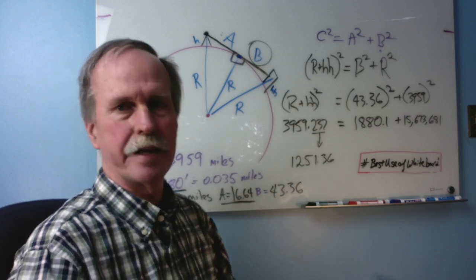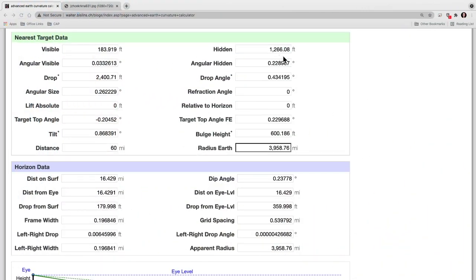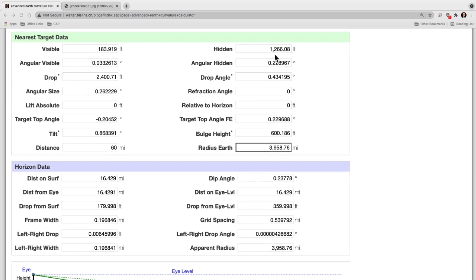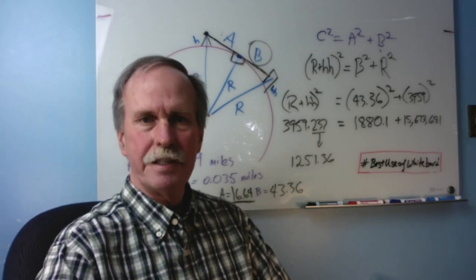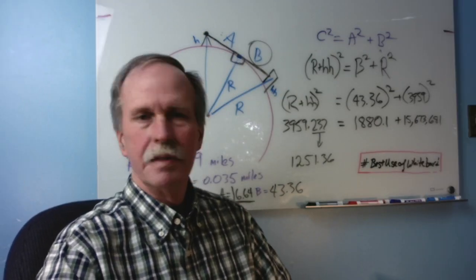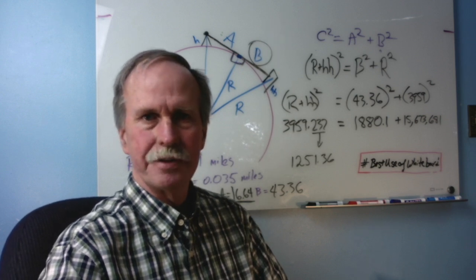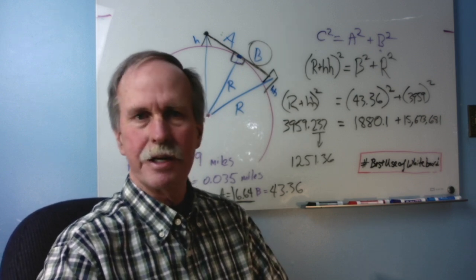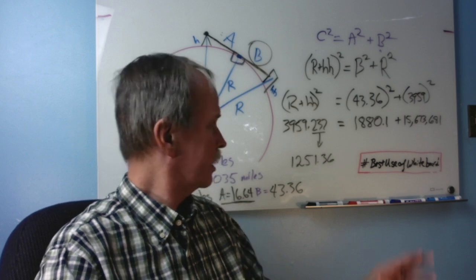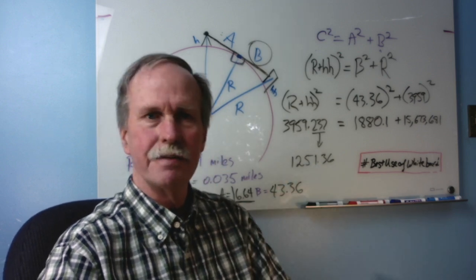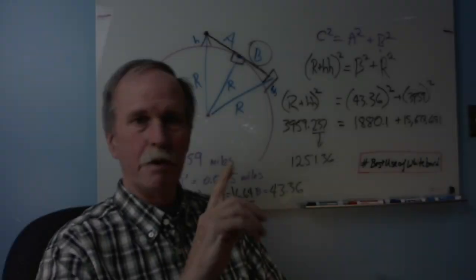Let's go ahead and see what the curve calculator said. Well, the curve calculator came up with 1266.08 feet, a difference of about 15 feet. So why is it 15 feet different? Well, probably just little rounding errors. I only went out a certain number of significant digits and quite frankly, 15 feet over 60 miles isn't all that bad, but wait, there's more. That's how you calculate it with zero refraction.